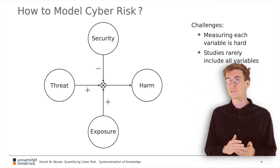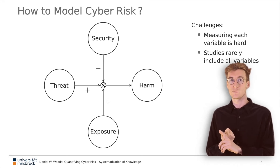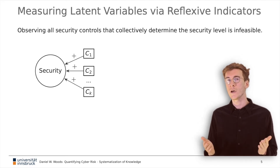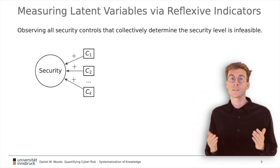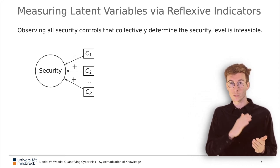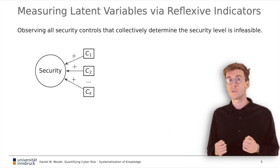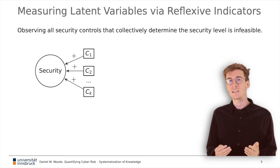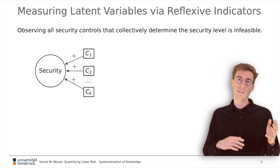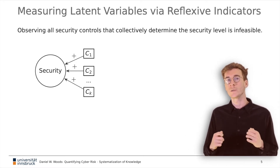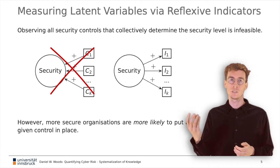We now describe how we extend this basic model to address these concerns. First, the measurement problem. Intuitively, we know that implementing security controls improves the security level. Thus, the seductive approach to measuring security is to enumerate, observe, and aggregate all controls that cause lower harm for a given threat level. Unfortunately, it is impractical to measure all such controls, not least because they are constantly changing.